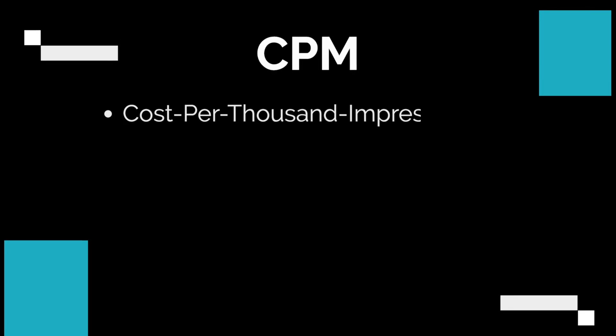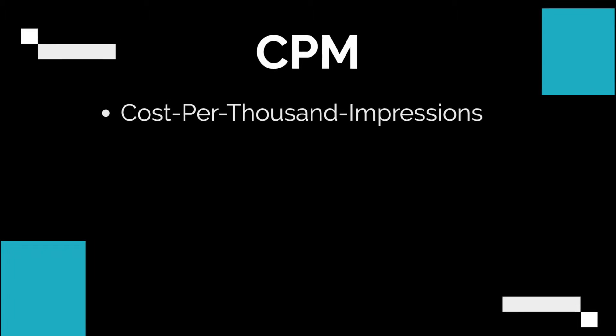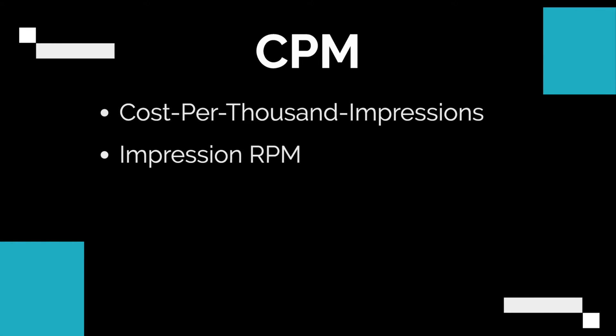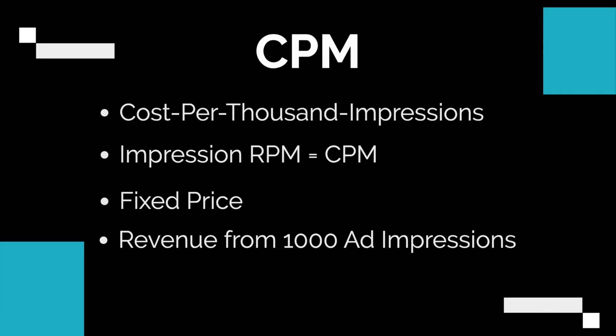What is CPM? It is cost per thousand impressions, also known as impression RPM. CPM is a fixed price for which advertisers bid or pay for each ad impression. It represents how much revenue a publisher has generated from thousand ad impressions.